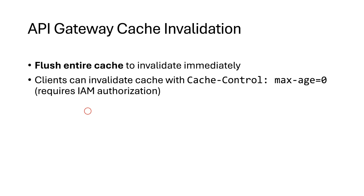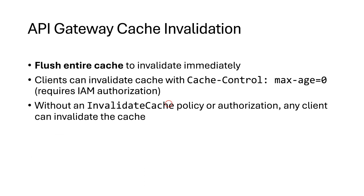However, this requires proper IAM authorization to ensure that only authorized clients can perform cache invalidation. If you don't set up an invalidate cache policy or authorization, any client can invalidate the cache. This can lead to unauthorized cache invalidations, which could degrade your API performance — because every time the cache is invalidated, the request has to hit the backend, increasing latency.